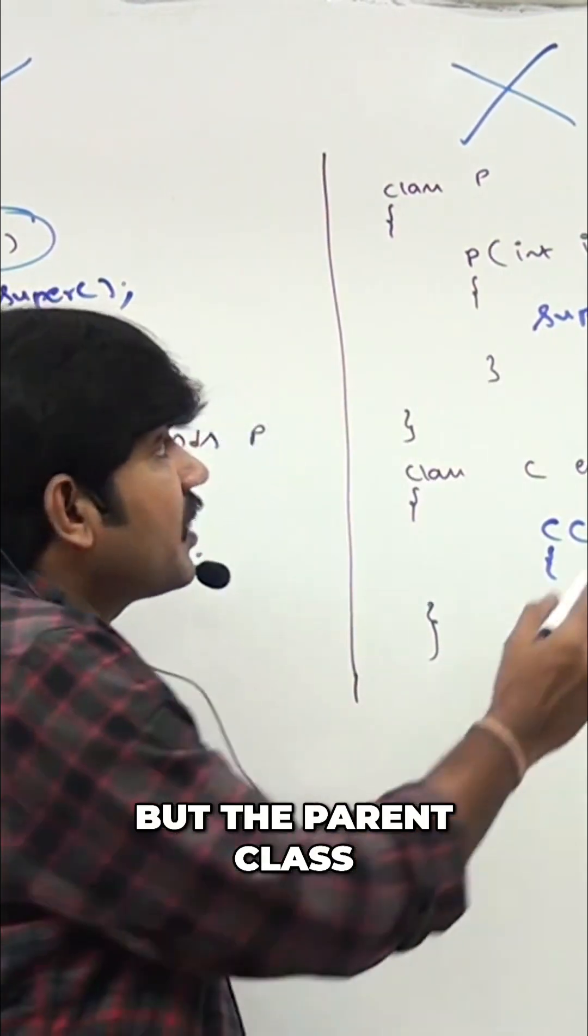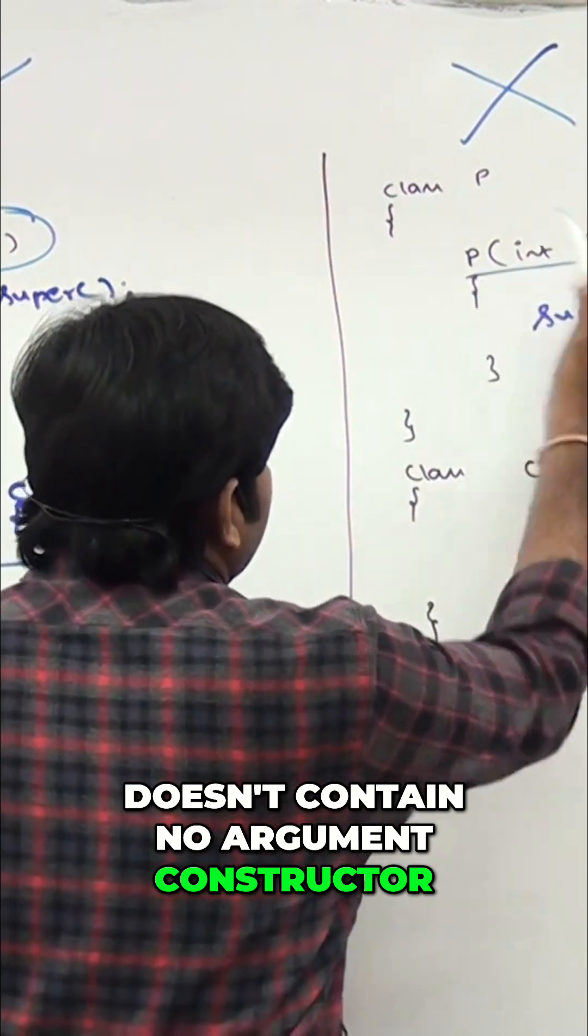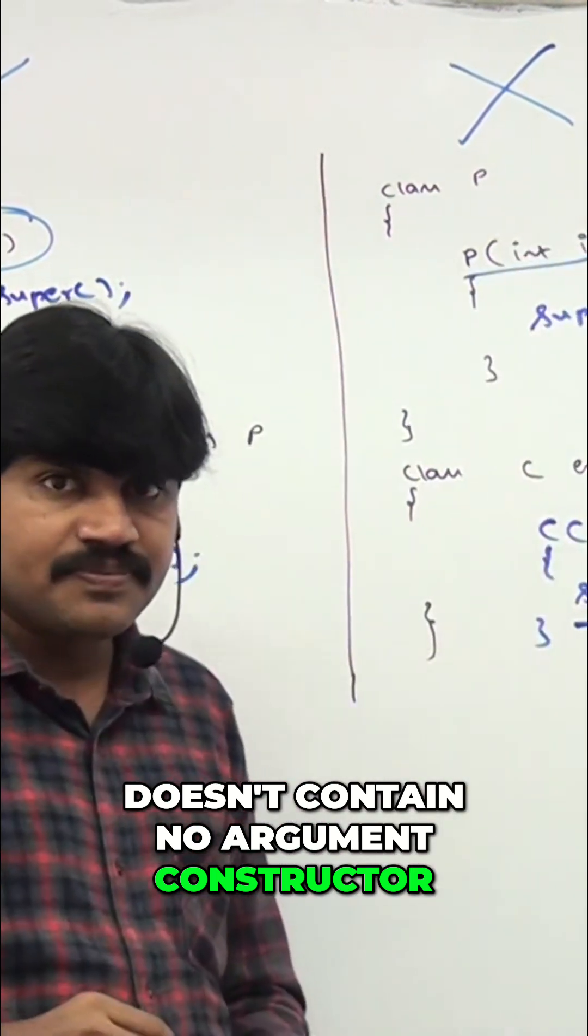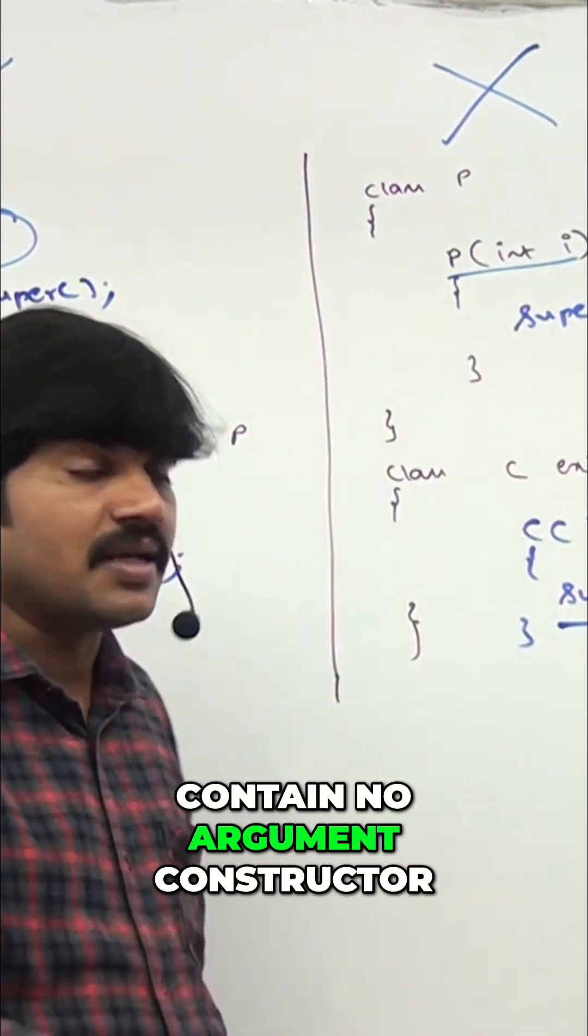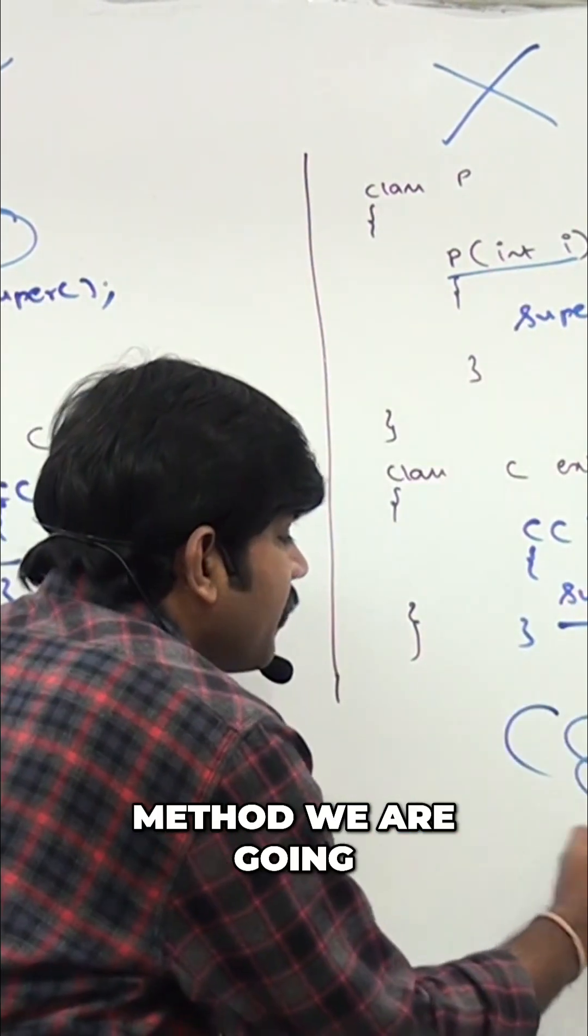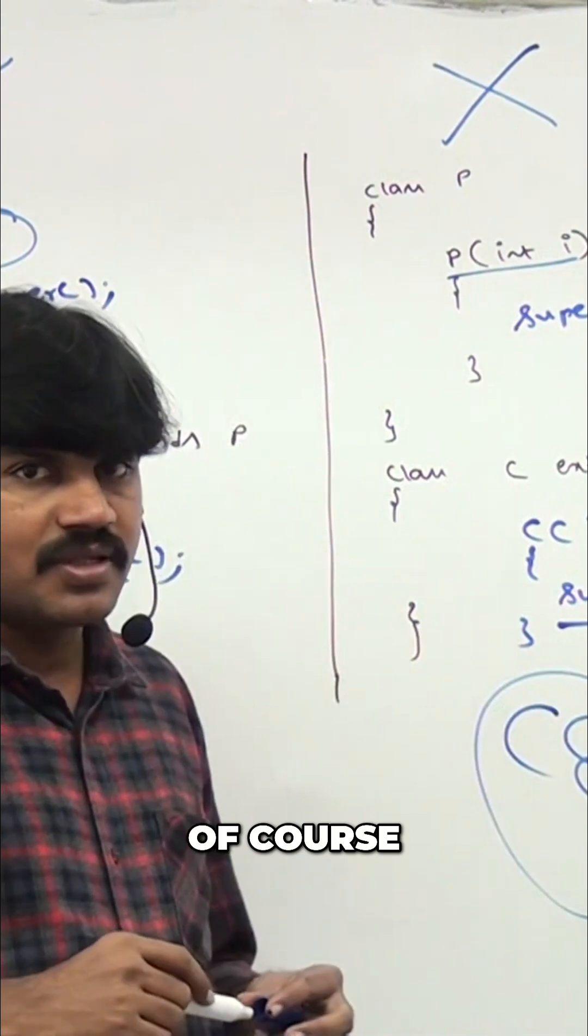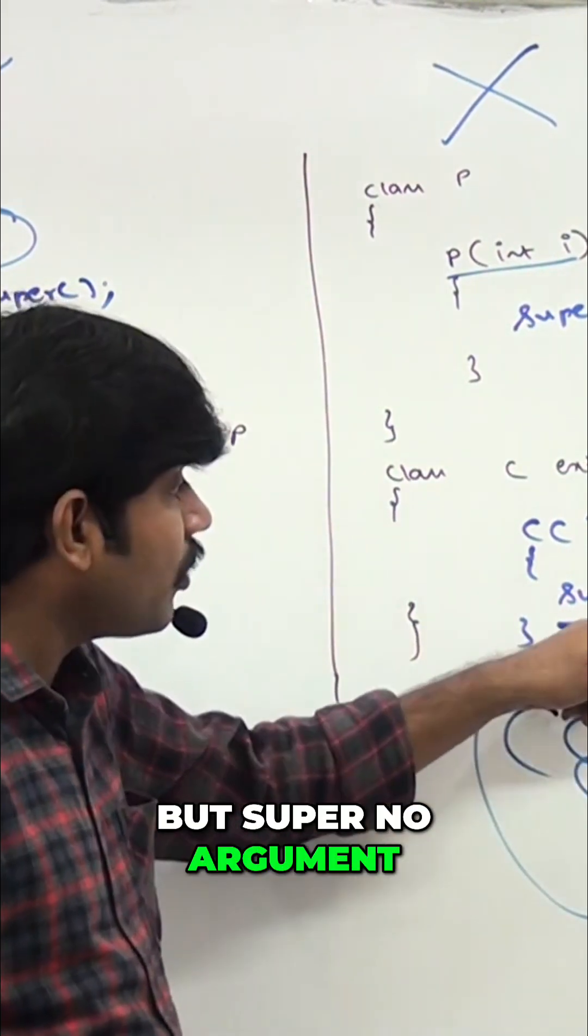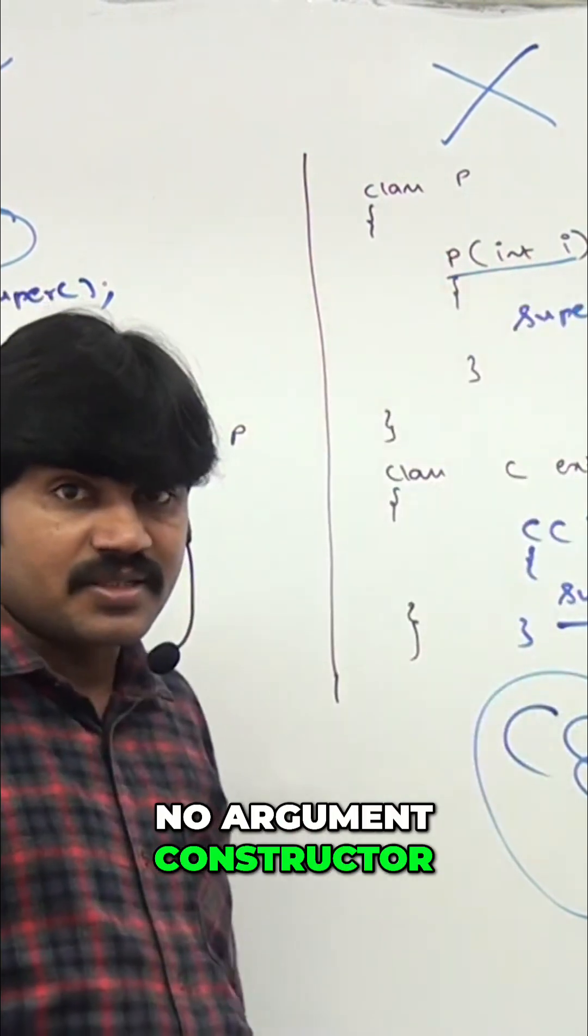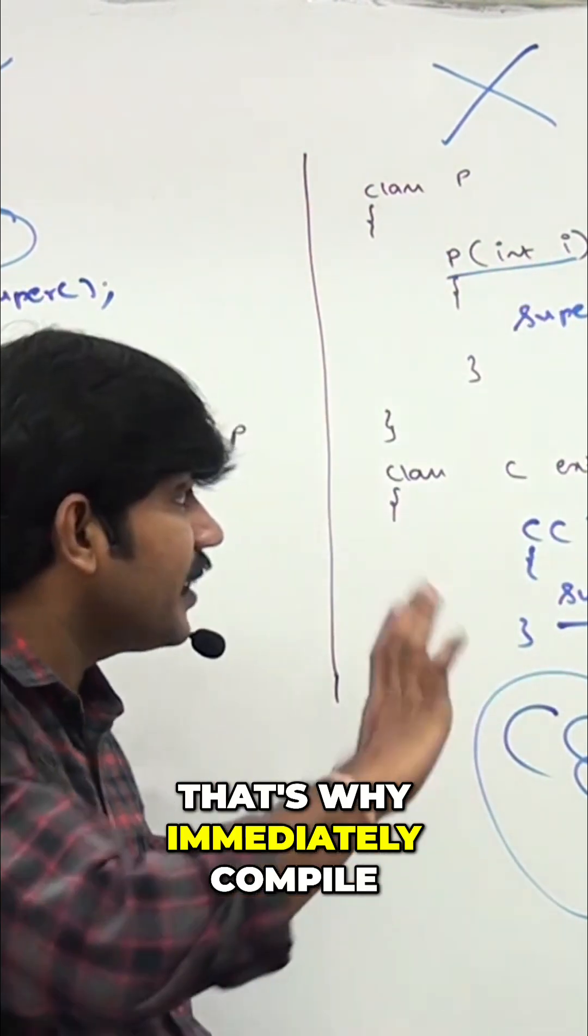But the parent class does not contain a no-argument constructor. Again, the parent class does not contain a no-argument constructor, that's why we are going to get a compile error. Of course, it's not because of my code—the compiler is going to place super, but the parent class doesn't contain a no-argument constructor, that's why immediately we are going to get a compile error.